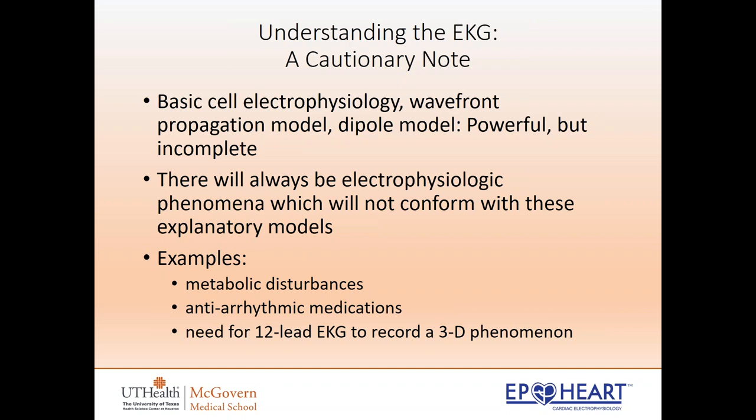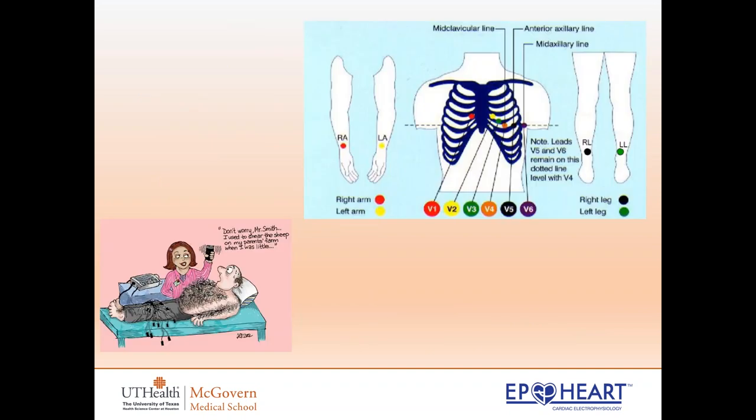We see it every day in the EP world — a tachycardia looks like it's coming from one spot on the EKG, but then we take them to the lab and it's coming from somewhere totally different, due to the patient's status, anti-arrhythmic drugs, or some metabolic disturbance. The EKG is what we look at as normal, but there will always be some unexplained phenomenon. For 12-lead placement — right arm, right leg, left arm, left leg, and the precordial leads — it's important in the EP lab that these are placed exactly where they're supposed to be. Make sure the patient is shaved and you have good contact.